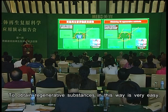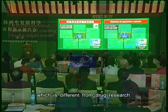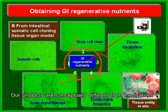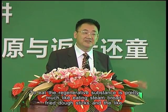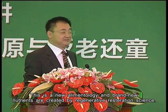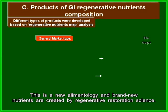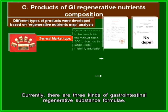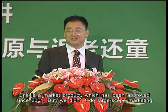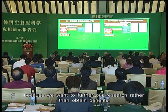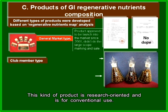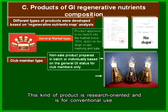To obtain regenerative substances in this way is very easy and is different from drug research. What we do is not to attack something using toxic substances — our products are conceptually different from medication. To consume the regenerative substances is pretty much like eating steamed bread or fried dough sticks. This is new alimentology and brand-new nutrients created by regenerative restoration science. Currently, there are three kinds of gastrointestinal regenerative substance formulae. One is a market product approved since 2001, though large-scope marketing was not pursued because the aim was to further research rather than obtain commercial benefits.